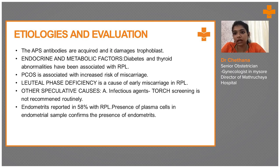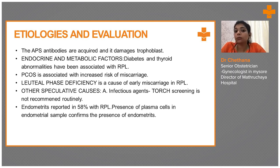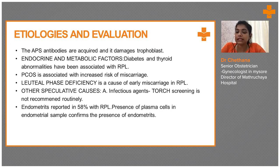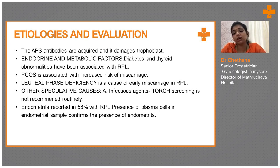Other speculative causes are infectious agents, like TORCH infections — this has to be screened in people suffering from recurrent pregnancy losses. And endometritis: what is endometritis? It is the infection of the endometrium. It is reported in 58% of RPL cases. Presence of plasma cells in the endometrial sample confirms the presence of endometritis. So we should do an endometrial biopsy in these patients to rule out endometritis.